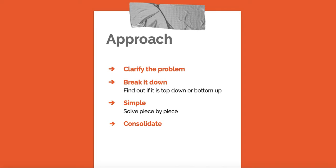Bottom-up comes into play when they ask about revenue — for example, how much revenue is being earned from one store. You assume the revenue per customer, find the footfall in the store, and then multiply them. The first thing you should do whenever you get a problem is figure out whether you're going to use a top-down or bottom-up approach. Once that's clear, the solution starts brewing in your head. The third step is to solve piece by piece — break it into segments and solve each one. The fourth step is to consolidate all the pieces to get the final answer.